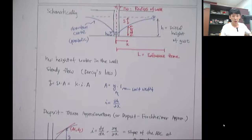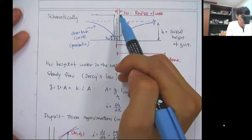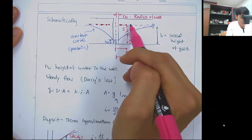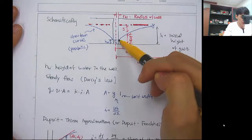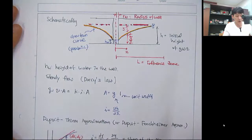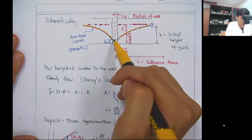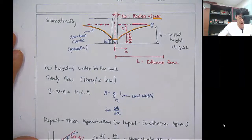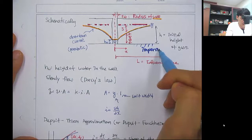Looking at the schematic, the formation is shown with the groundwater table as a dashed line. The original groundwater table is shown, and by the drawdown, there is a parabolic pre-discharge curve. The water height in the well is h sub w, r_w is the radius of the well, and h is the initial height of the groundwater table measured from the impermeable layer.